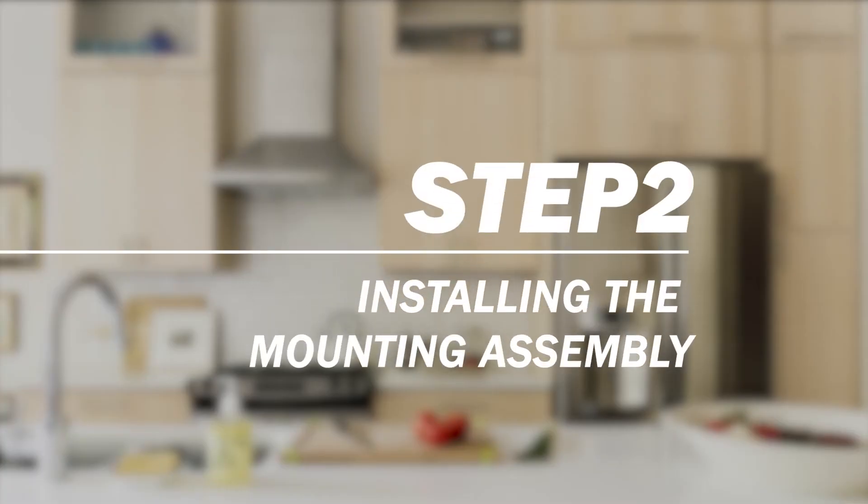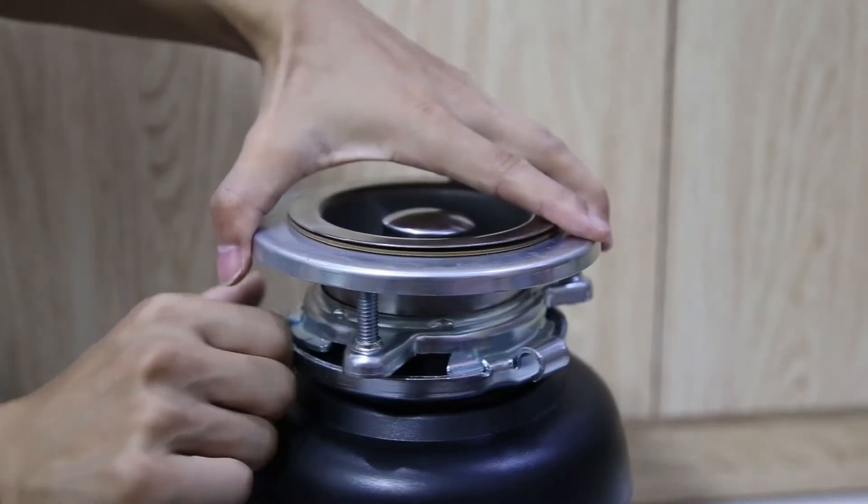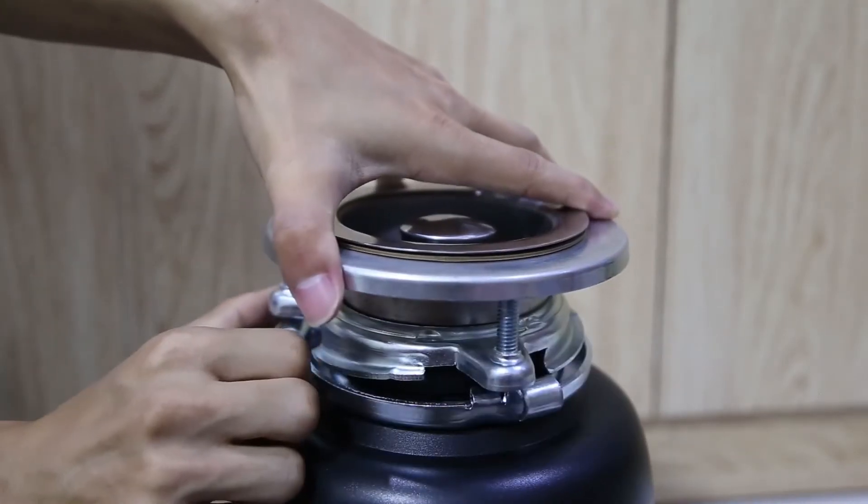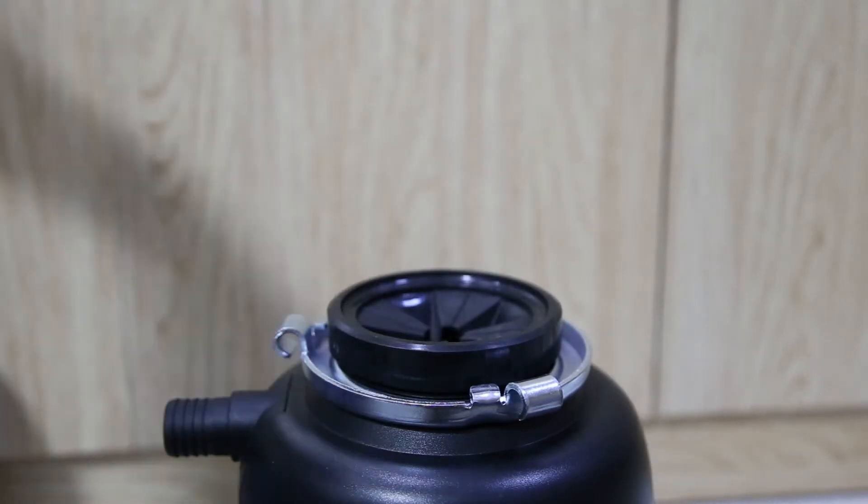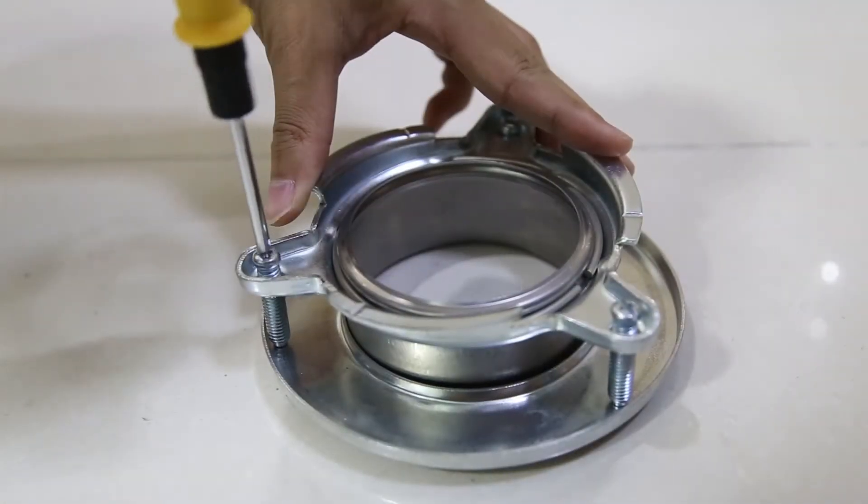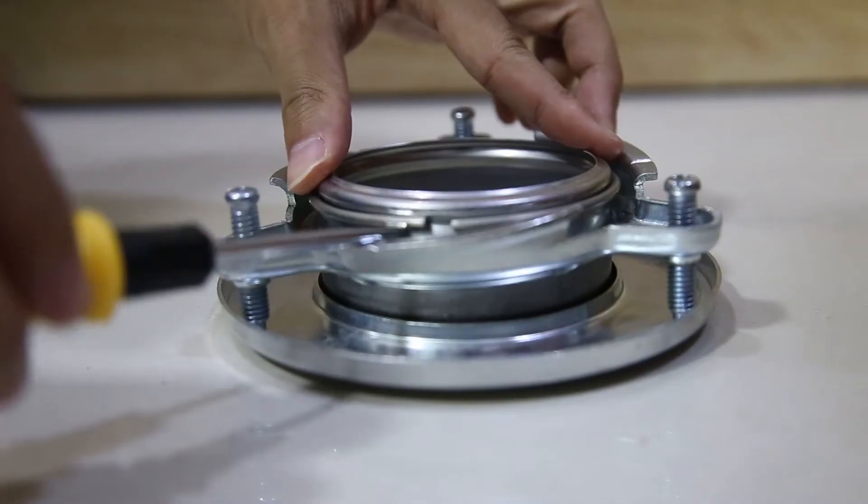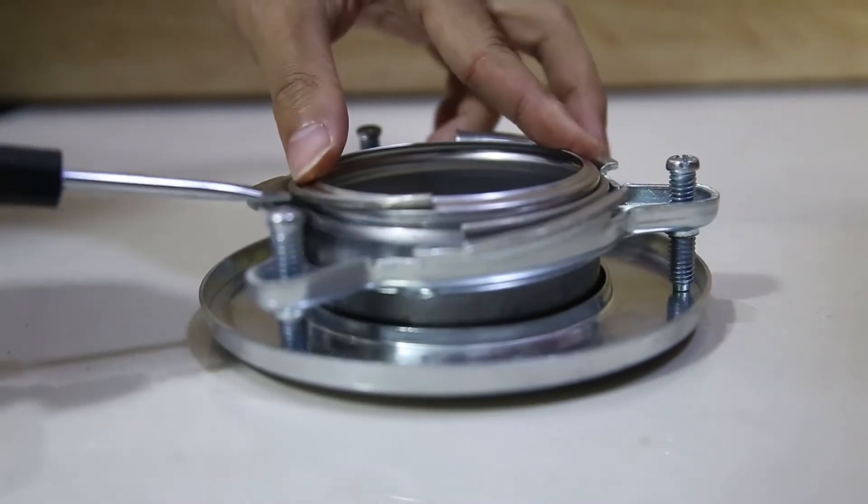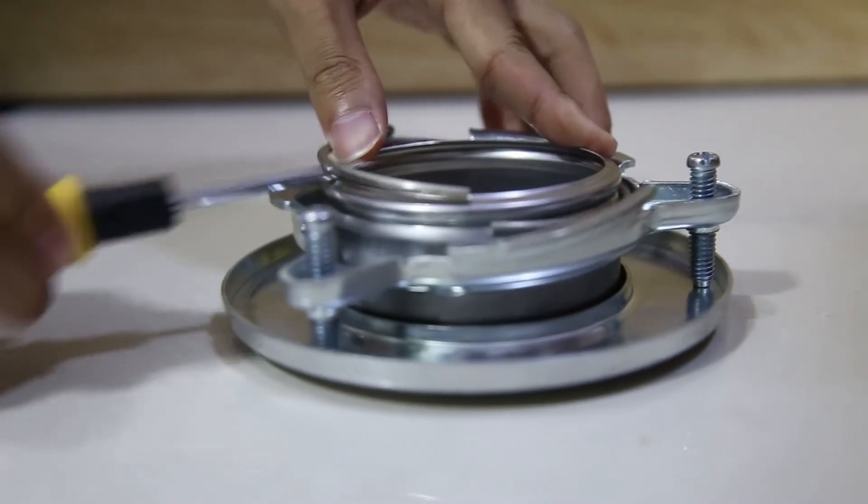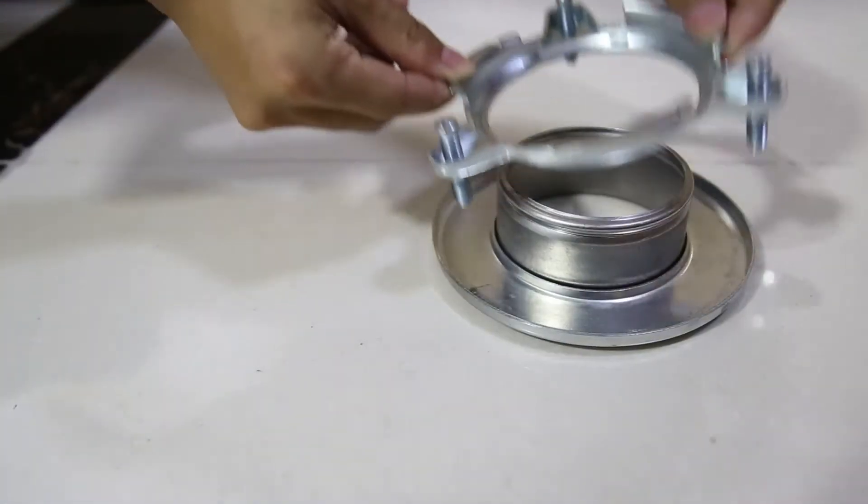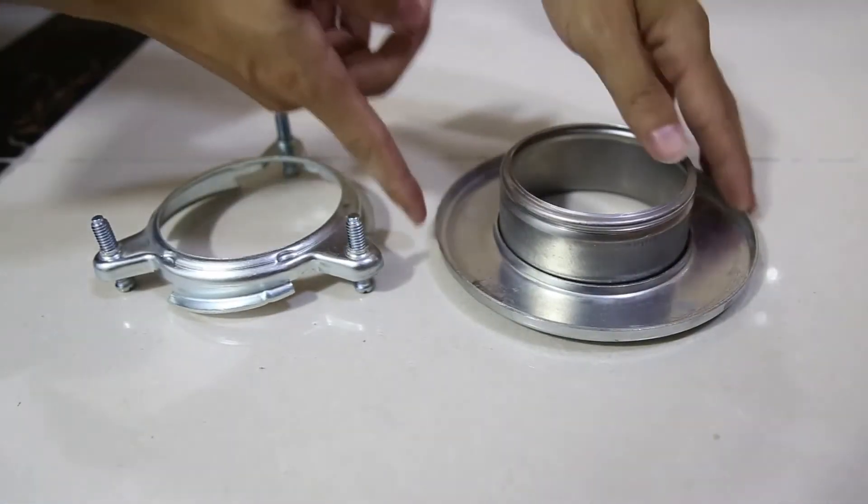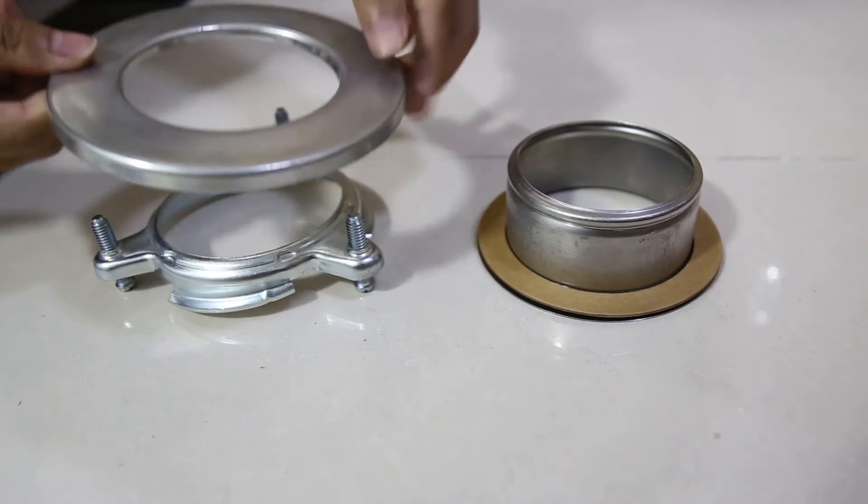Step 2: Install the mounting assembly. Remove the mounting assembly from the garbage disposal by turning the lower mounting ring counterclockwise. Using the screw on the mounting ring, use the screwdriver to remove the snap ring from the sink flange. Then remove all the components.